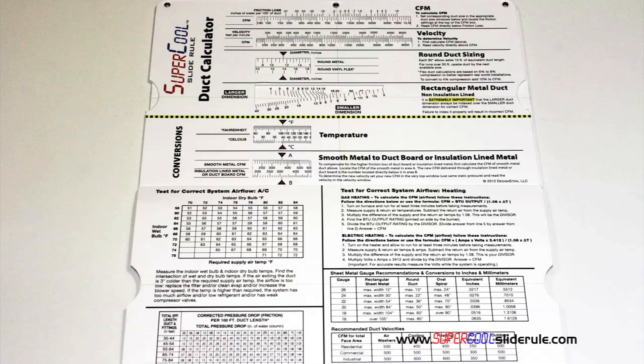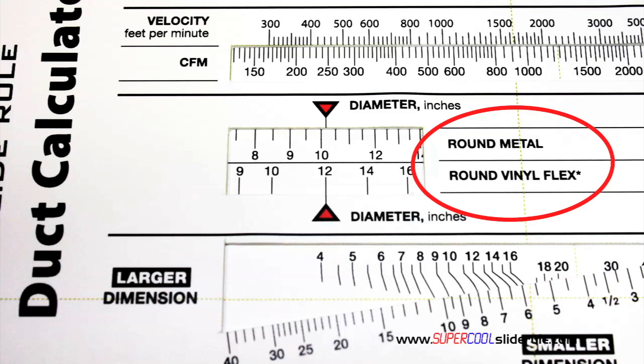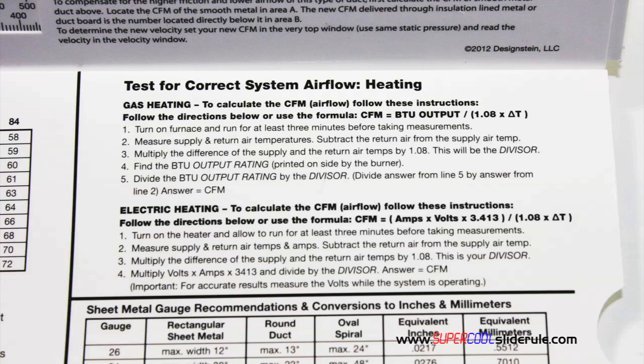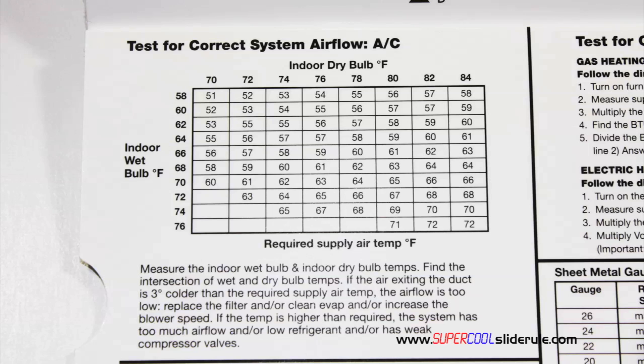Inside, it is packed with even more information. It performs sizing of both metal and flexible duct. It has the only direct reading conversion from smooth metal to insulation-lined metal we've ever seen. The majority of technicians have never been taught that if the insulation is on the inside of the ductwork, you cannot size it with a regular duct calculator. It also has step-by-step directions for determining airflow through a gas furnace, electric furnace, or an air conditioning unit.